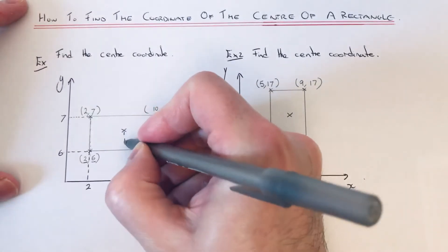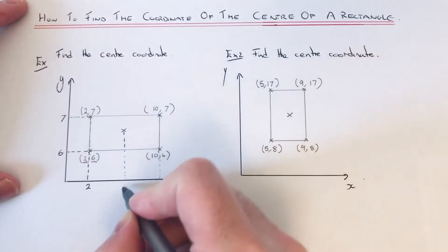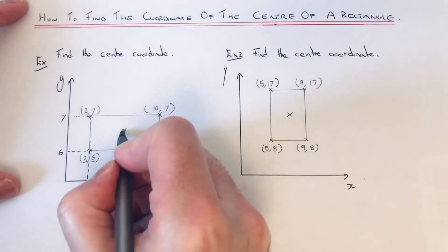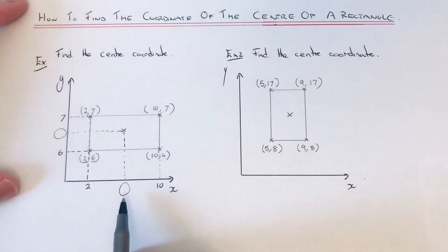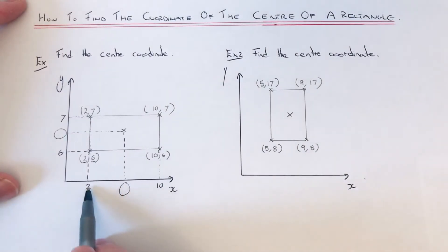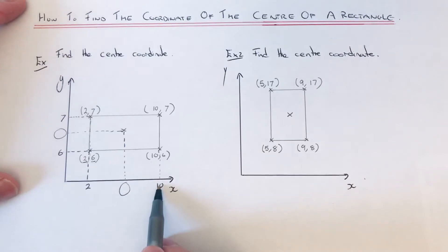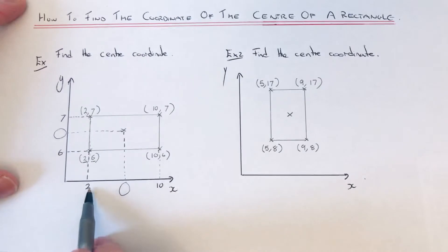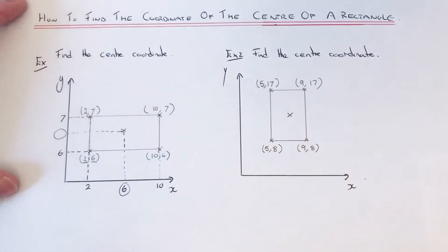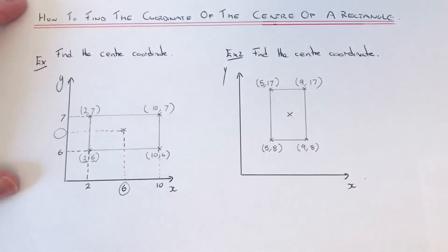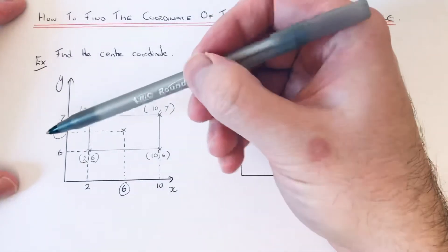We now need to find the center coordinate — that means finding this number on the x-axis and this number on the y-axis. The x number is halfway between two and ten. If you don't know it off the top of your head, add the two numbers: ten plus two is twelve, then halve it to get six. So the x-coordinate of the center is six.